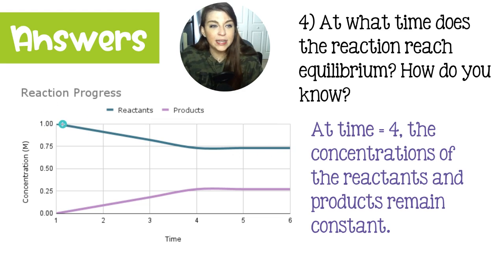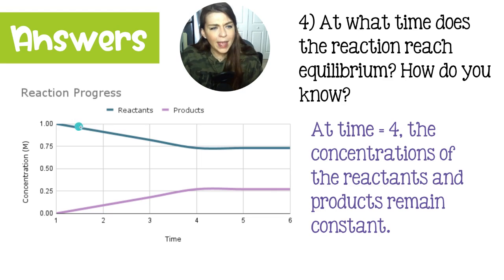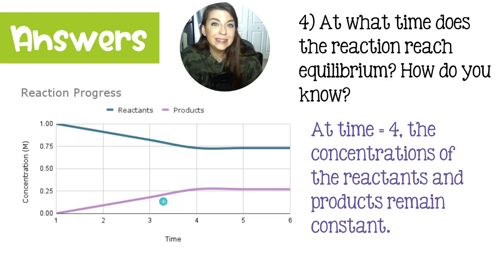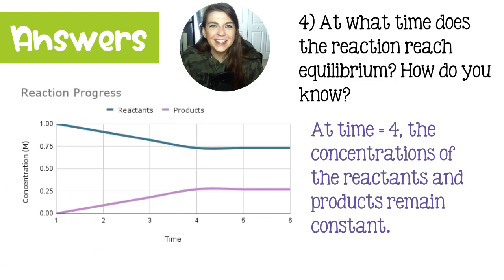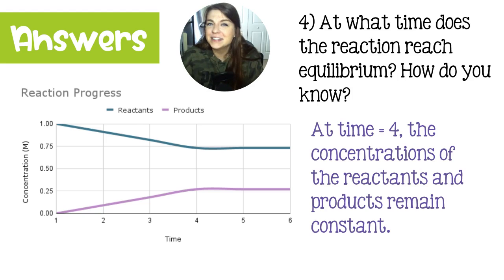Right at the start, the forward reaction is faster because we have a lot of reactants and very few products. As this goes on, the forward reaction slows down and the reverse reaction speeds up until they are equal — and when that happens, our concentrations hold constant. That is what the graph of an equilibrium reaction looks like. That is all I have for you on equilibrium. Please make sure to leave any questions in the comment section below the video, and subscribe so you don't miss the next one.